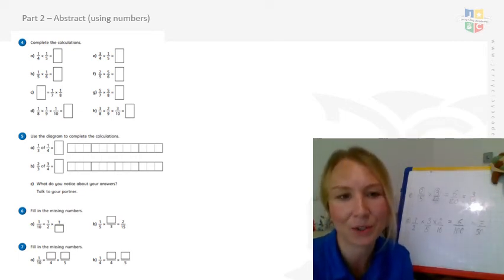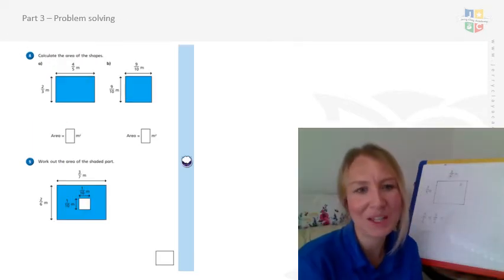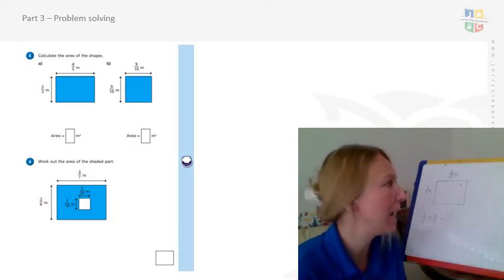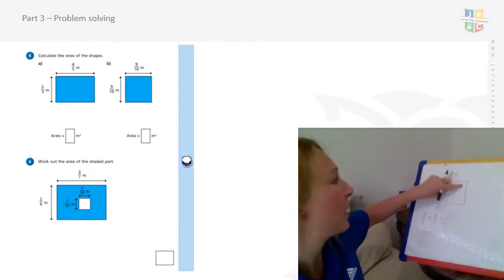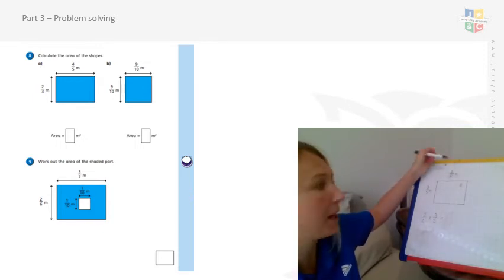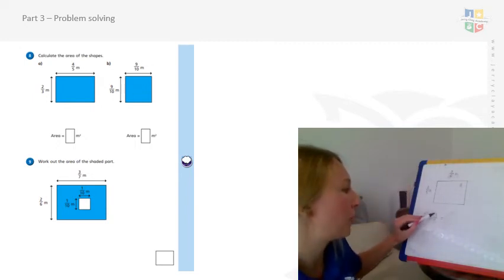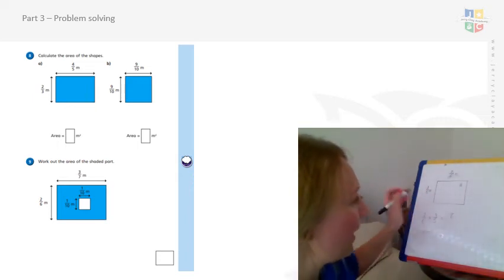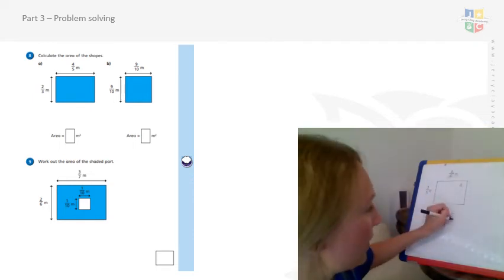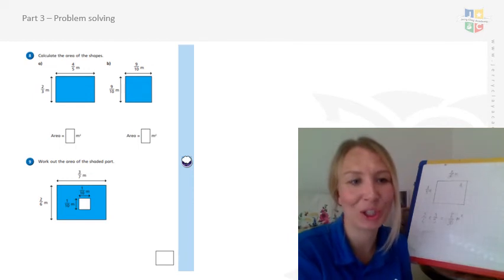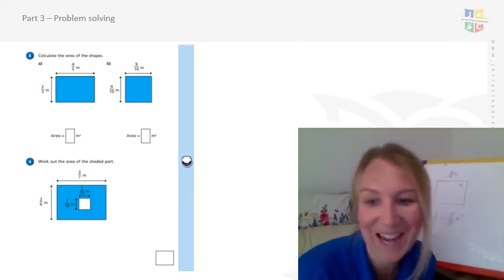So the next bit of the lesson is looking at problem solving and applying the skills that you've learned. So here I have got to find out the area in meters squared. So I've got two sixths of a meter and three fifths of a meter as the width. So I'm going to do two sixths multiplied by three fifths. So my numerator times by my numerator: two times three, which is six. And six times five, which is thirty. And I need to remember as well that that is meters squared. So can you now have a go please, Year 6, at number eight and number nine.